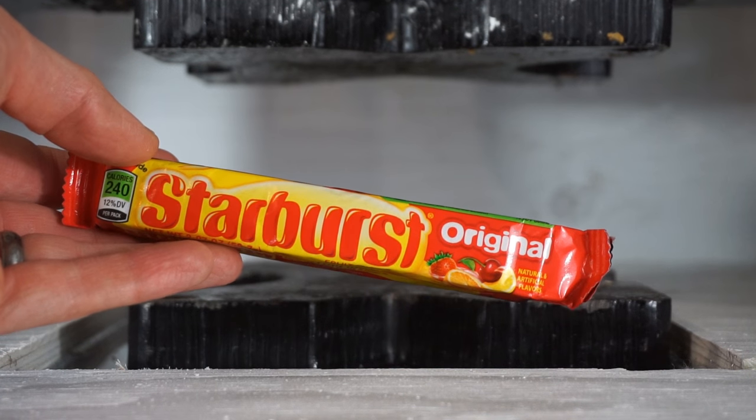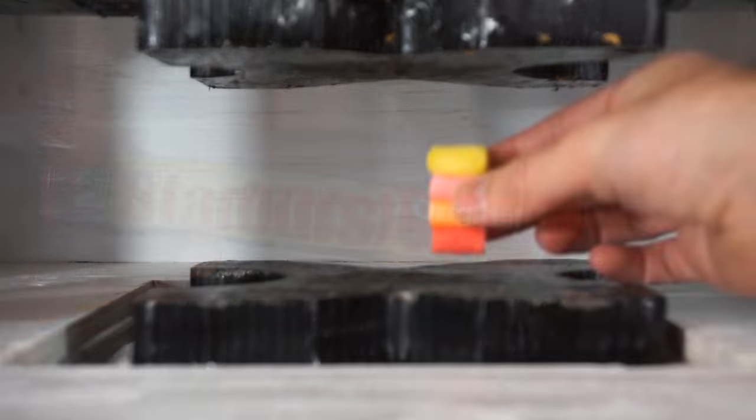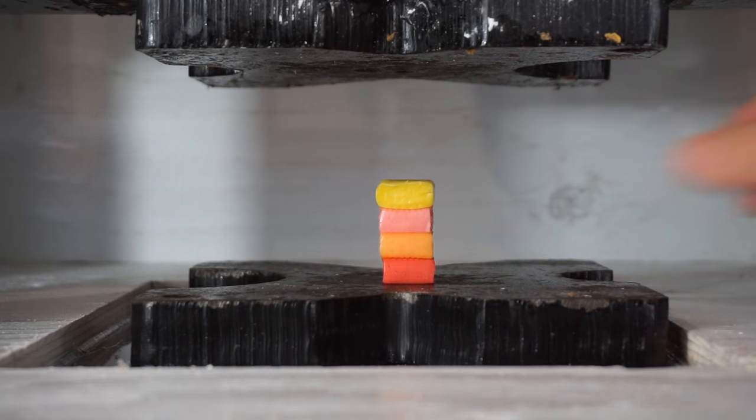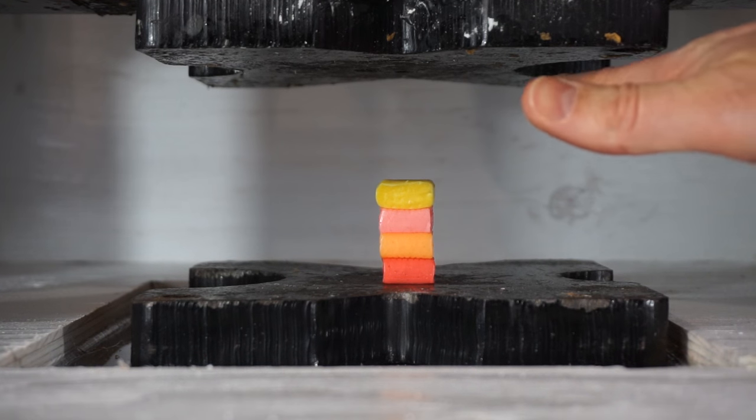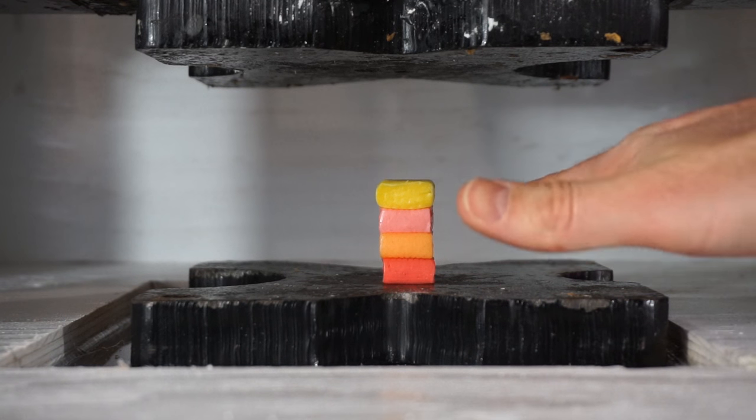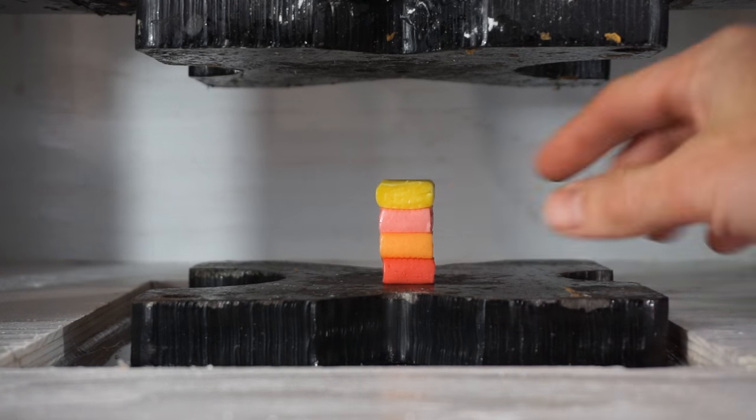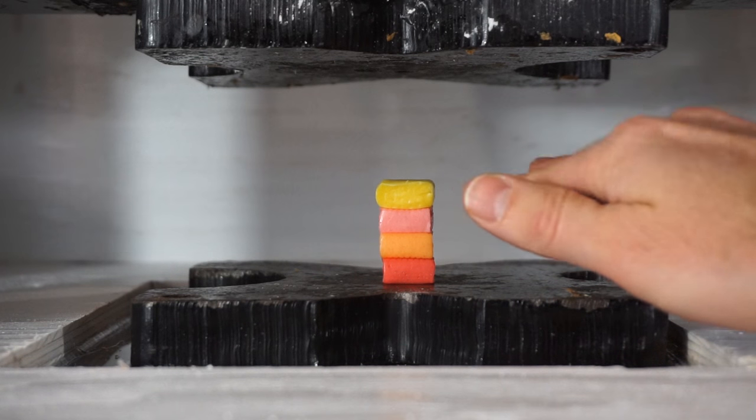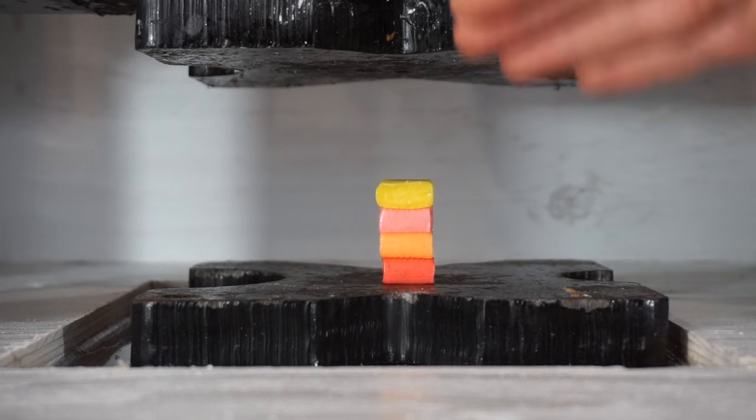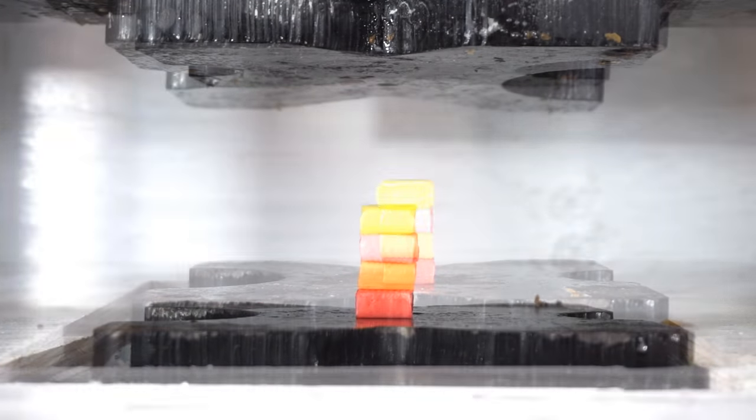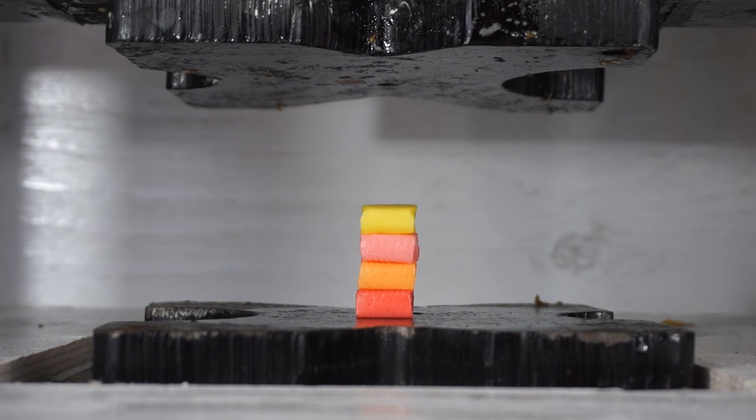Today I'm going to be crushing Starburst. Here's what I'm going to try to do: I want to see how many layers of Starburst I can get. I'm going to stack them up and squish them, but not all the way so that it all squishes out. I'll squish it down as far as I think is right so that I can fold it on top of each other and then squish it again.